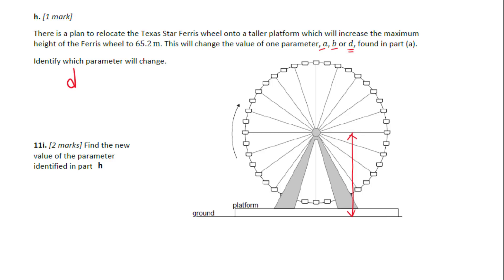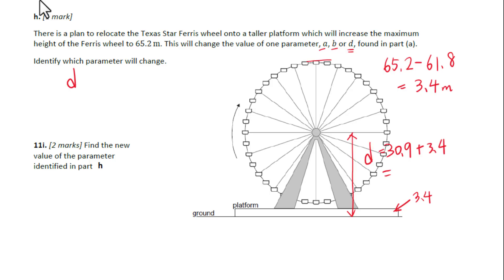Find the new value of D. We know the maximum height is 65.2 meters. Subtract the diameter of the ferris wheel: 65.2 minus 61.8 gives the height of the platform as 3.4 meters. Then 3.4 plus the radius of the ferris wheel, 30.9, gives the new D. So new D equals 30.9 plus 3.4 equals 34.3 meters.